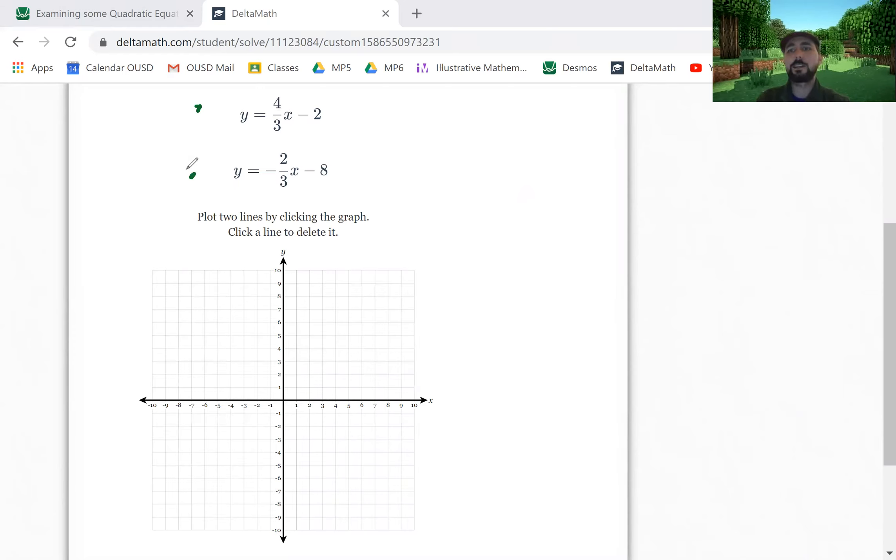This is essentially a graphing lines review. To graph a line, we are looking at two things: this number in front of the x and this number right here. It's our job to remember what these numbers mean. The two things that those numbers mean are the slope and the y-intercept.